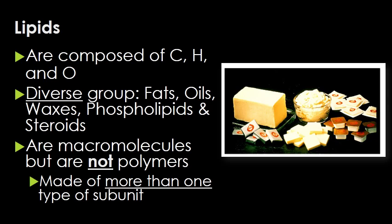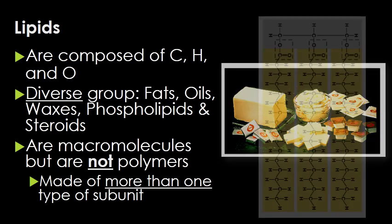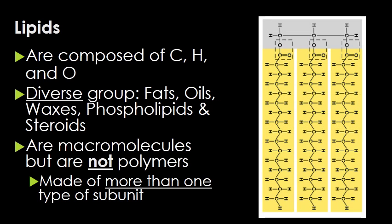Lipids are made of the same elements as carbohydrates but have very different structures, proportions, and biological properties. They are a group of naturally occurring molecules including fats, waxes, oils, steroids, and some fat-soluble vitamins. Unlike carbohydrates, nucleic acids, and proteins, lipids are macromolecules but not polymers — they are actually made of more than one type of subunit.